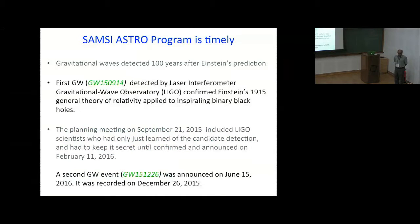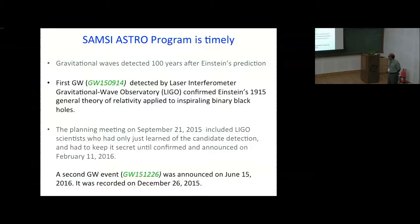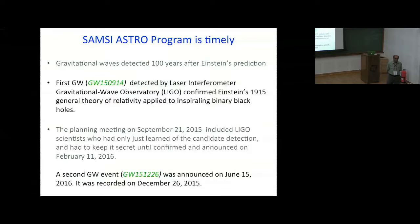This program is timely because during the planning meeting for the astrostatistics program in 2015, many people who were involved in LIGO also attended. They found it very difficult to keep secret that they had discovered the first gravitational wave, and they were not allowed to say anything about it until it was publicly announced the following January. So we didn't know anything about gravitational waves at that time, but they knew — and that really helped us in forming various groups.